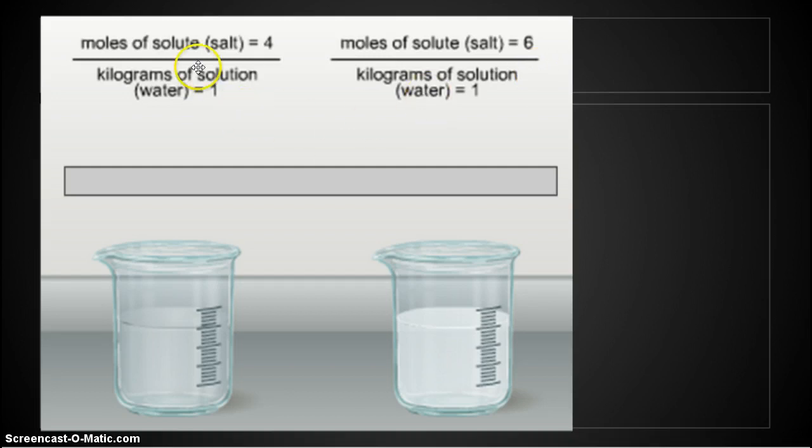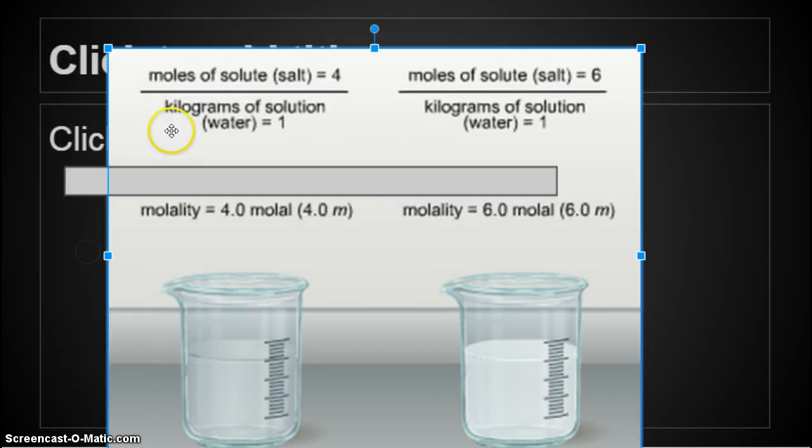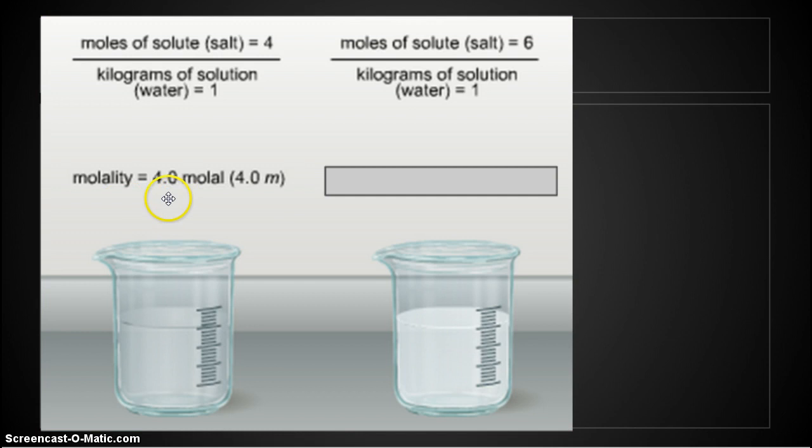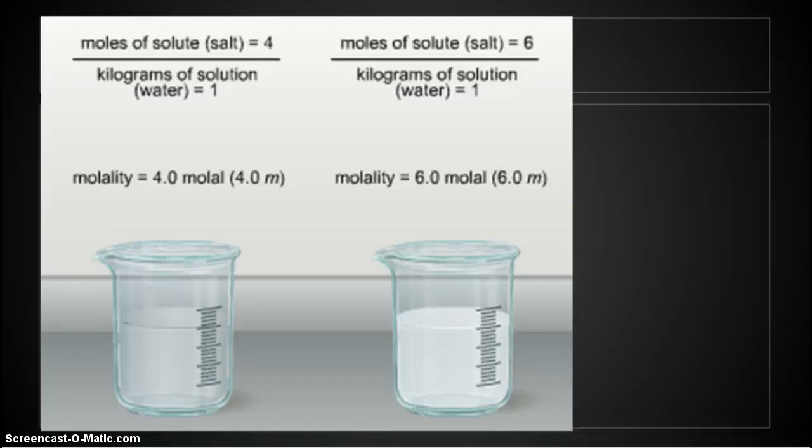And they are each in 1 kilogram of water. So what would be the molality of this first beaker on the left be? The molality would be 4.0 molal, or 4.0 italicized lowercase m. We took the 4 for the moles, divided it by 1 kilogram. We got 4 molal. All right, how many molal would this beaker be? Well, we take the 6, divide it by 1 kilogram, and we get 6 molal, or 6 moles per kilogram, or 6 lowercase italicized m.